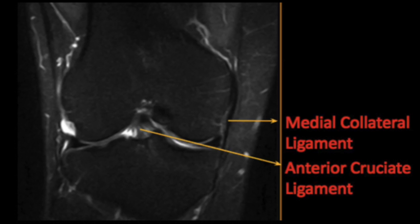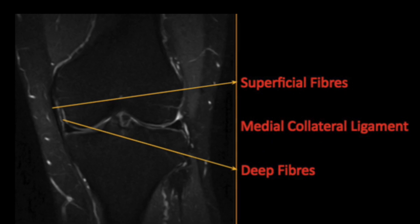After that, I examine the medial collateral ligament, checking its continuity, signal changes, and surrounding structures, looking for edema. In the case of the medial collateral ligament, we have to see the superficial fibers and deep fibers and look for pathology.